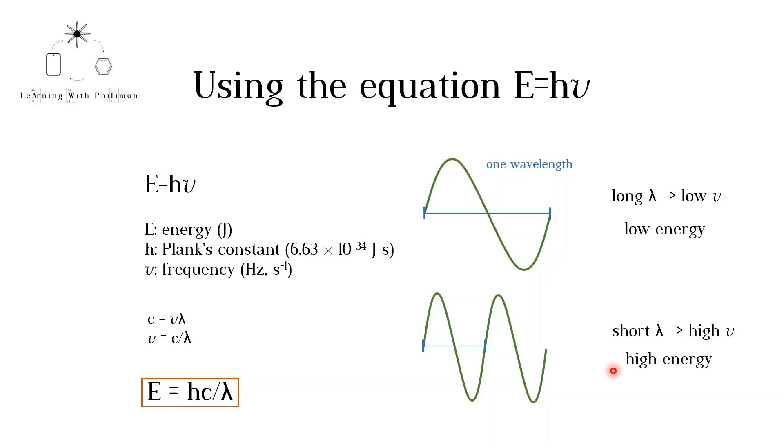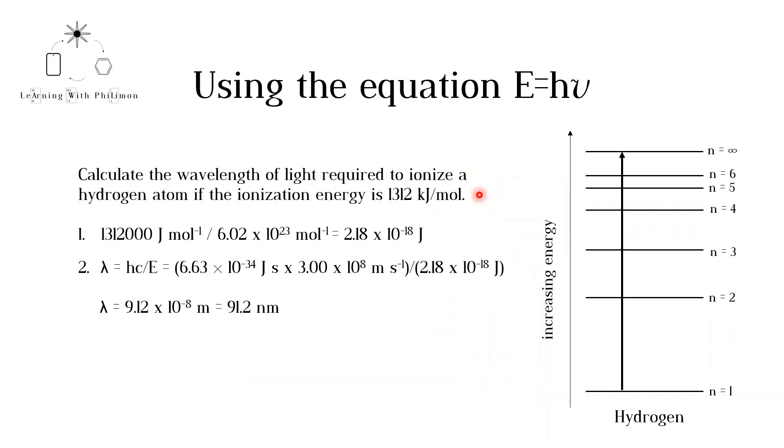Now let's see how we can apply this equation to atomic structure questions. A typical question would look like this. Calculate the wavelength of light required to ionize a hydrogen atom if the ionization energy is 1312 kJ per mole. The definition of ionization energy is the energy required to remove 1 mole of electrons from 1 mole of gaseous atoms.